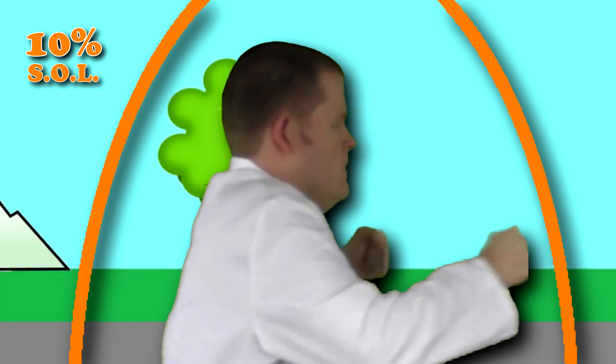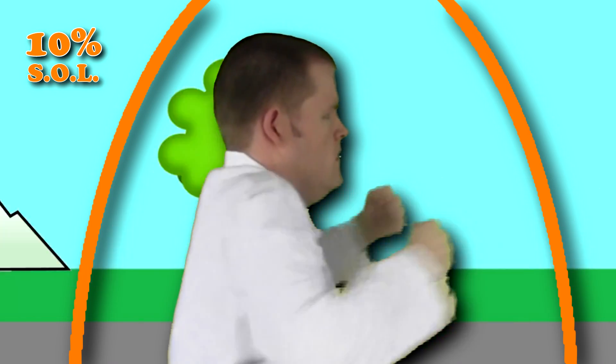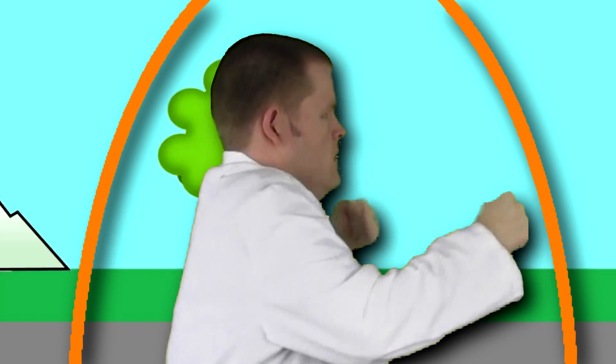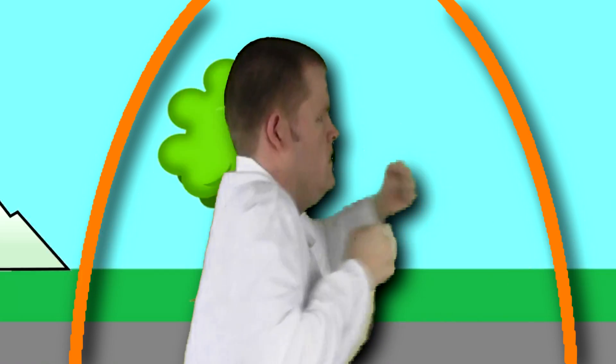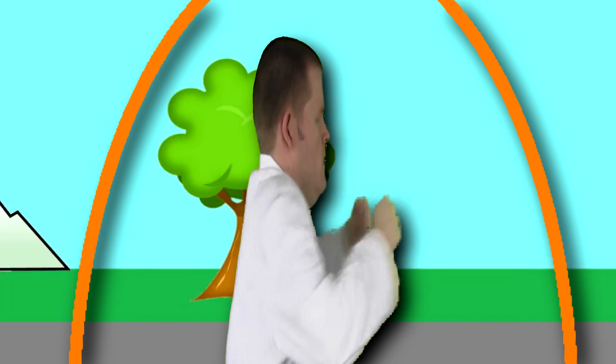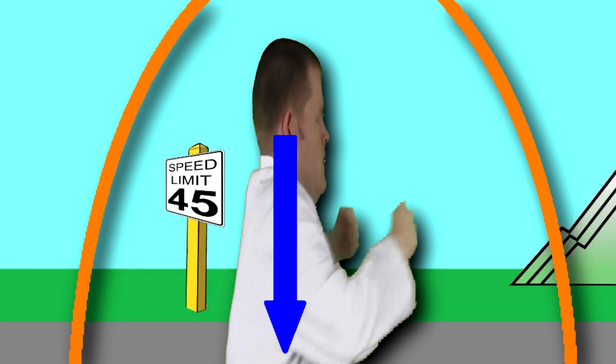I won't notice anything, but everyone else will see several things. One, time will pass slower for me. Two, I'll compress along the direction that I'm moving. And three, I'll be more attracted to the earth because my mass will appear larger.